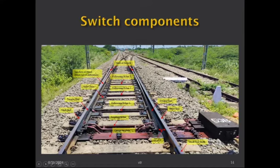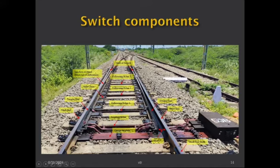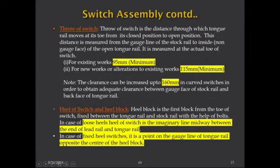When the throw is increased, the tongue rail bends and its middle portion goes inward, reducing the clearance between the gauge face of the stock rail and the tongue rail. This clearance must be sufficient to permit flangeway clearance for the running track. Ensuring 160mm throw is possible with thick web switches, so they are being used with this specification.